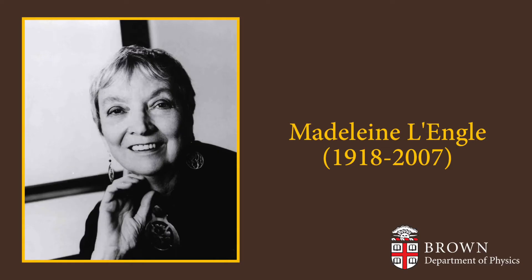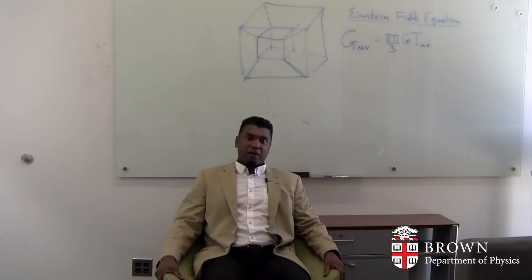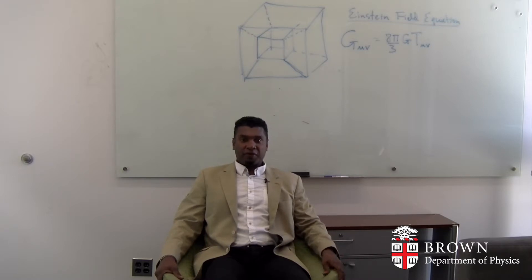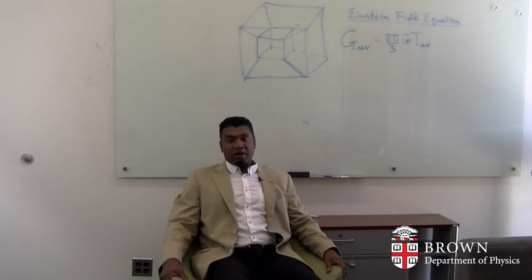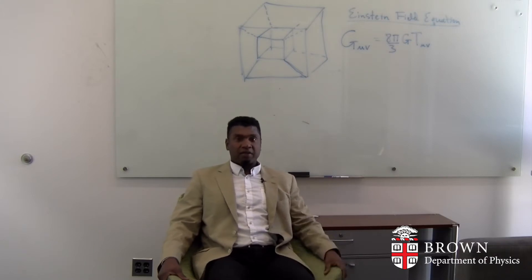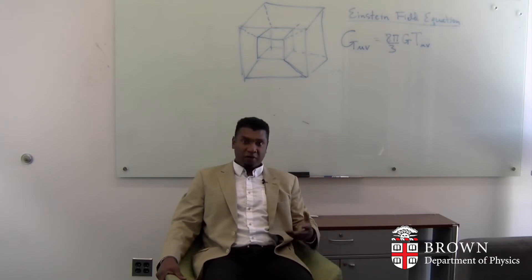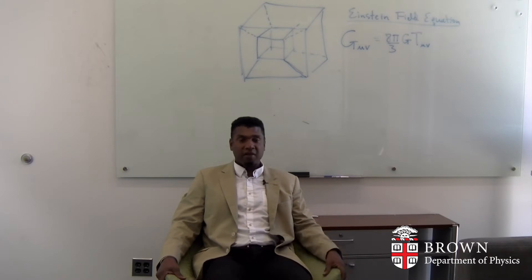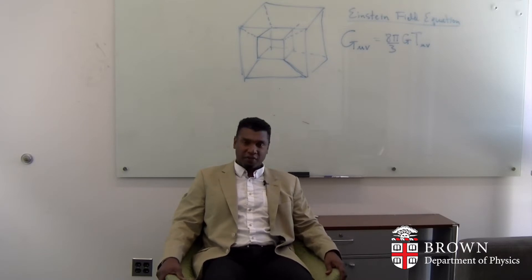Madeleine L'Engle wrote A Wrinkle in Time in 1962 and she was a big fan of the work of Albert Einstein. She saw it fit to use some of the concepts in general relativity to allow the protagonist Meg, and also her father who was a physicist, to tesser — to basically travel very far distances by using a feature of Einstein's theory of relativity.